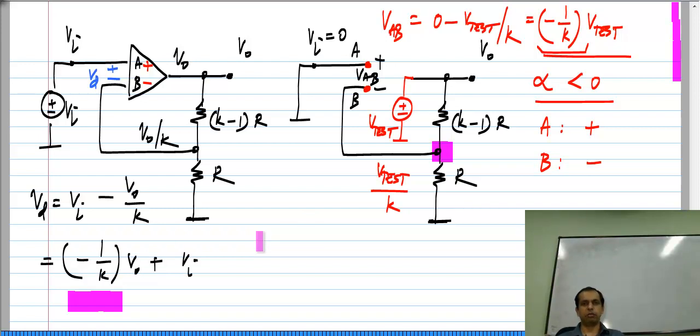So, this shows that our algorithm works properly. Now, in general it is easier to remove the op amp, apply the source and analyze the rest of the circuit. In this case the rest of the circuit was trivial, but in some cases it can be quite complicated.